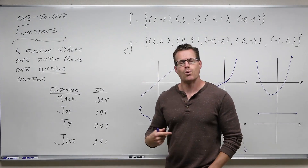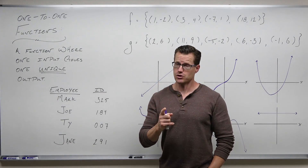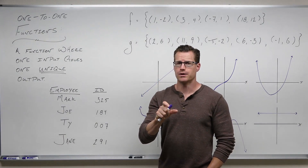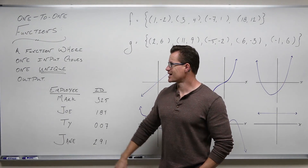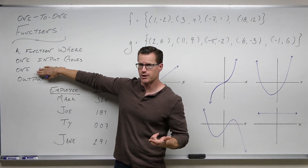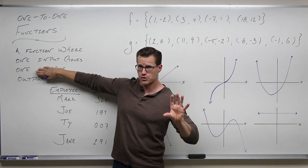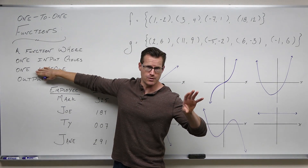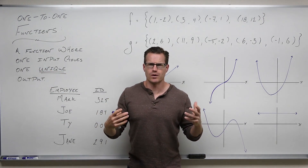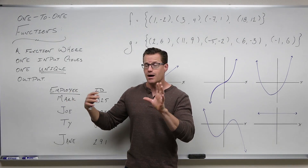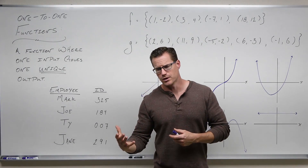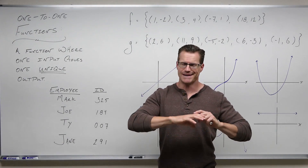So a function is a one-to-one function, firstly, if it's a function, and secondly, if that function gives you one unique output for every one input. A function is where one input gives you one output, but a one-to-one function says it is a function for sure, so one input is giving you one output, but that output is unique. Unique means it doesn't happen again — we're all unique, we don't have an exact replica of ourselves floating around somewhere. That's what a one-to-one function is: one input gives you one unique output.